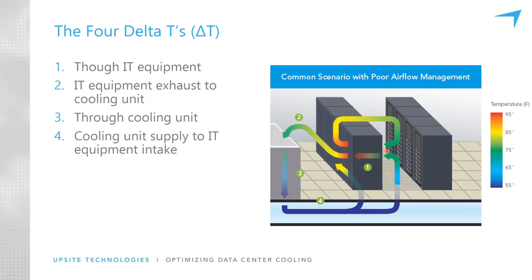One of the most misunderstood concepts in the industry is that you can put all the containment in you want and you are not going to reduce delta T2 unless you reduce fan speeds through the cooling units. If there are only four units of air moving through all the IT equipment but you've got 20 or 30 units of air moving through your cooling units, that extra air is going to find its way back to the cooling unit somehow — it has to — and it's going to mix and reduce that return temperature. So you put containment in place, then you can reduce fan speeds and optimize the room.